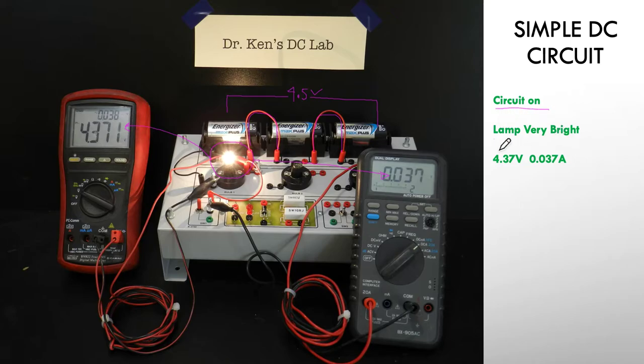So our circuit continues to be on. Obviously the lamp is very, very bright. Our voltage has gone up and our current has gone up.